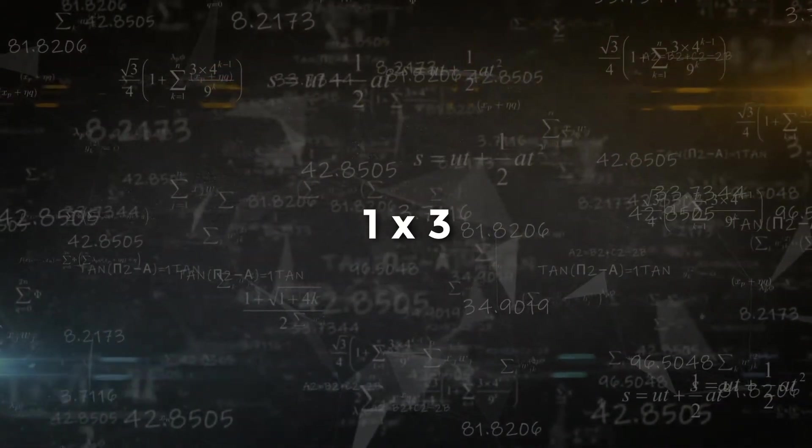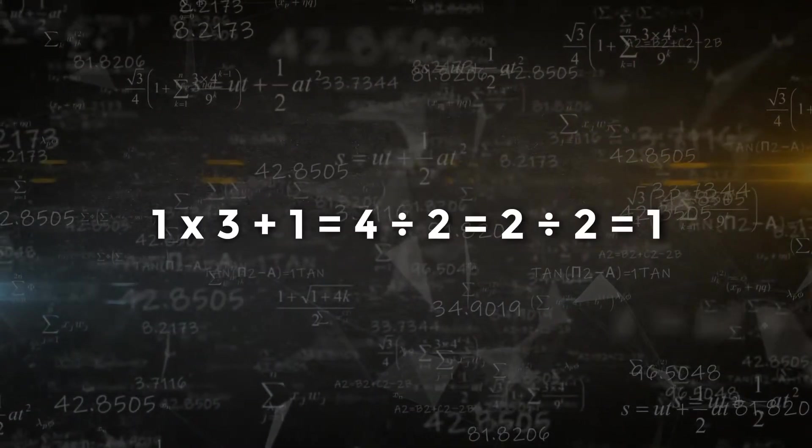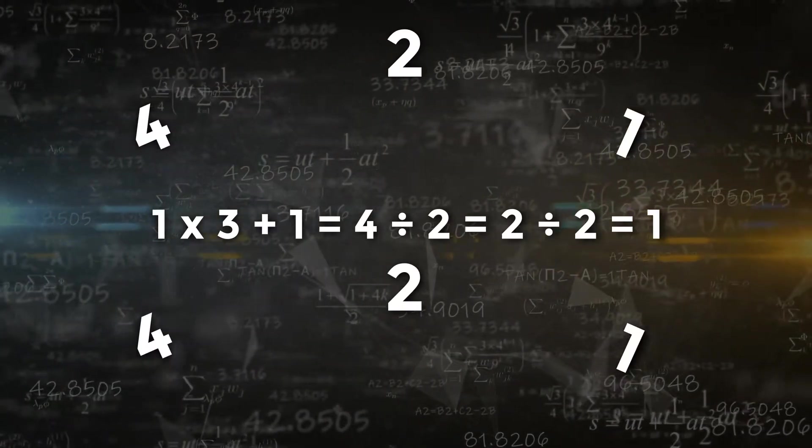Since 1 is odd, we multiply it by 3 and add 1, which brings us back to 4. Which goes to 2, goes to 1, goes to 4, 2, 1, 4, 2, 1. So we are in a loop, and the lowest number is 1.